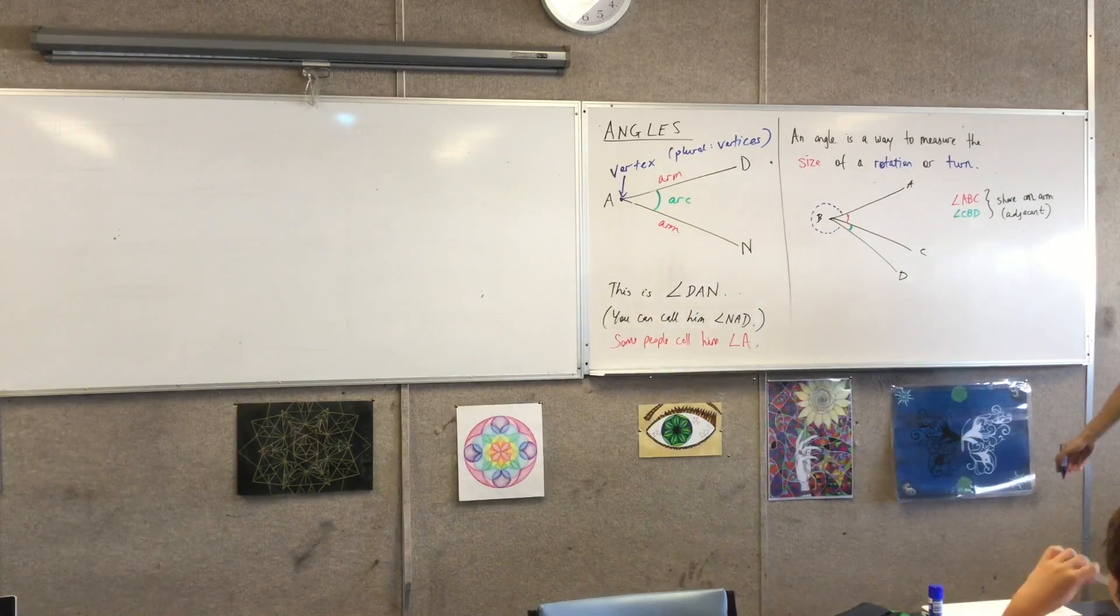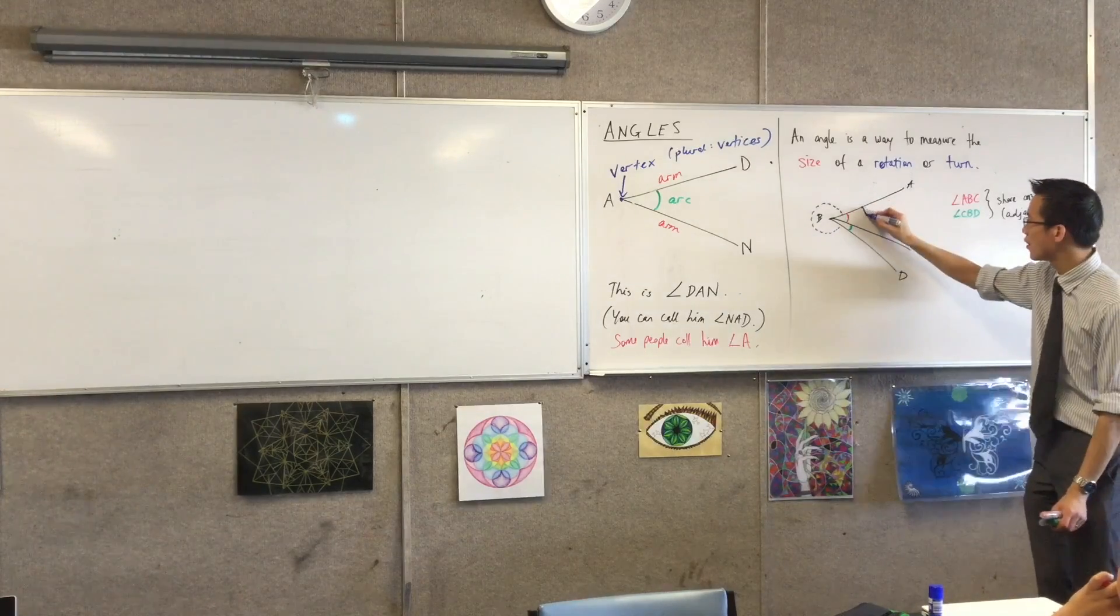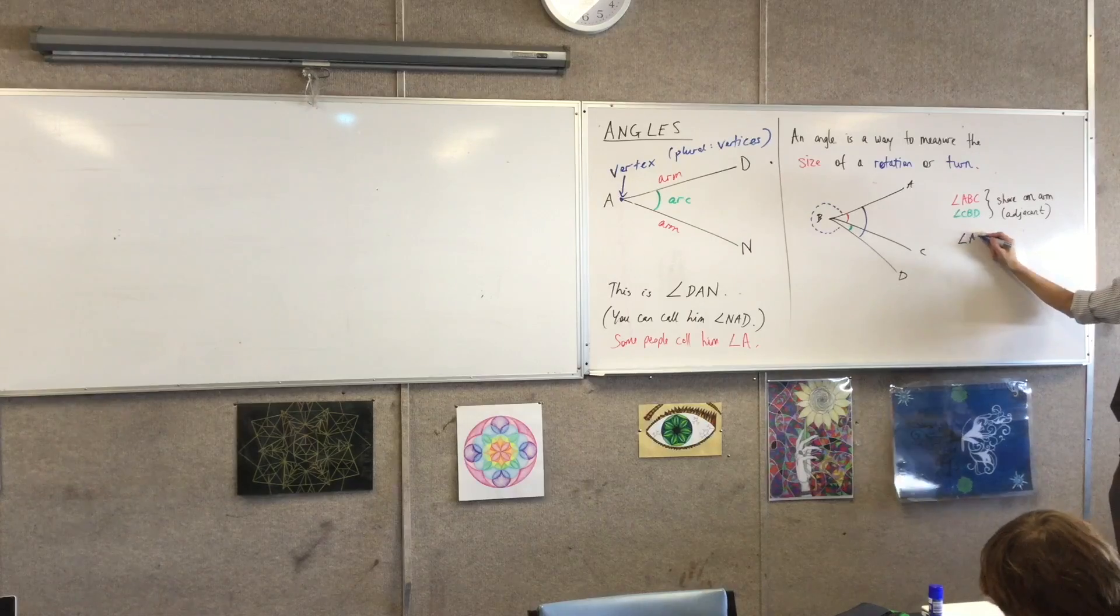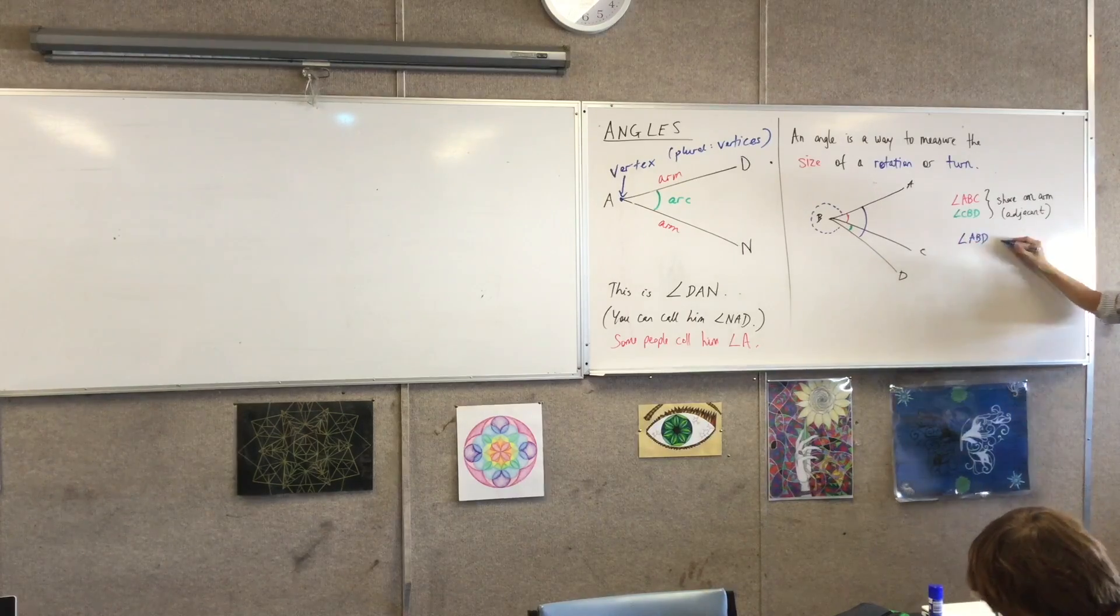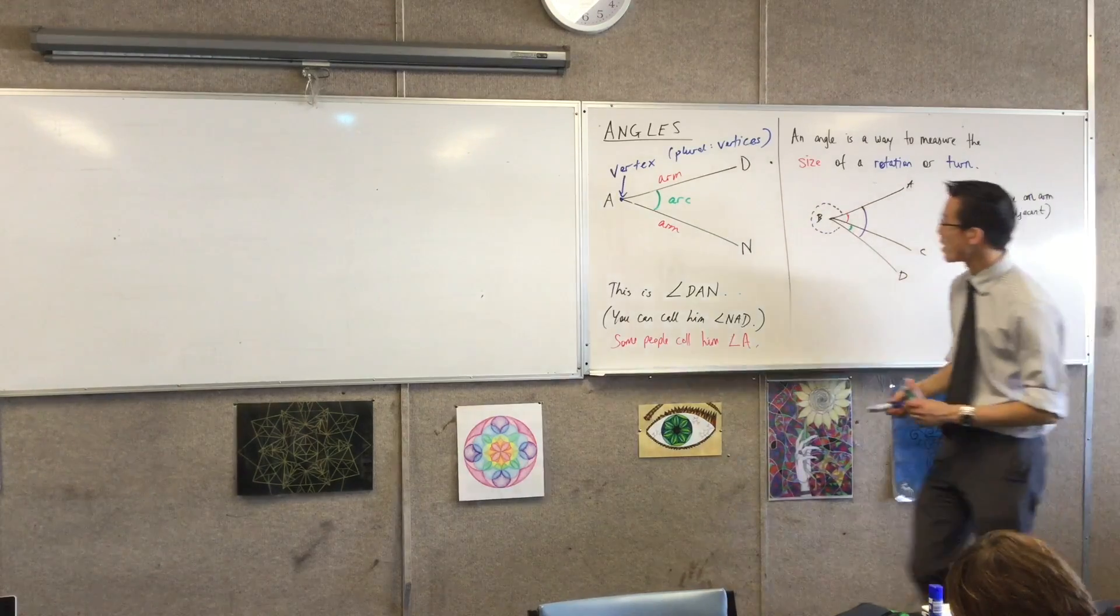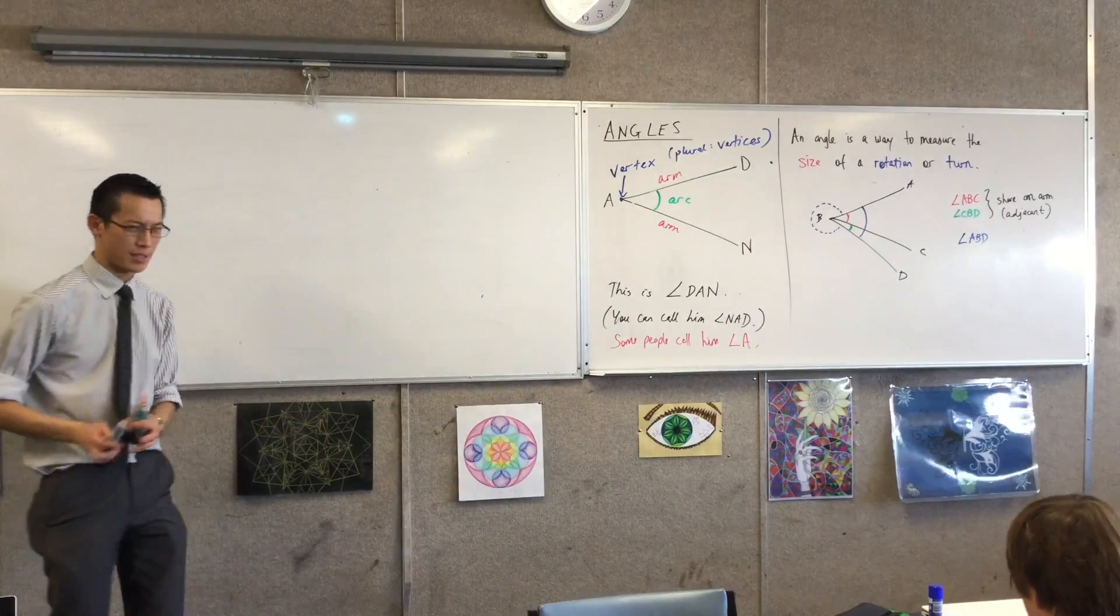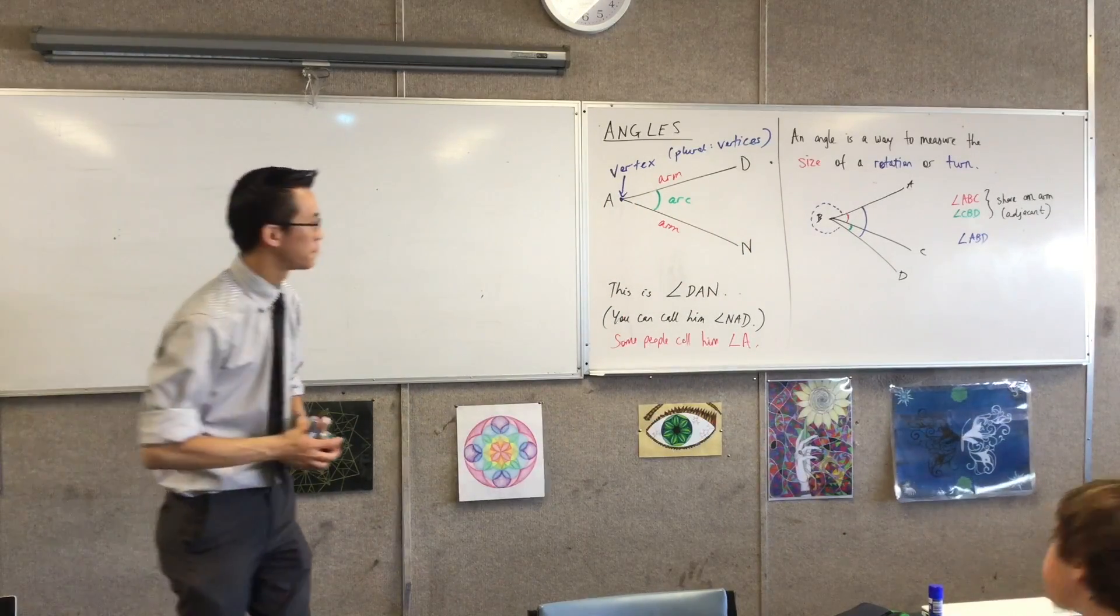I guess that means there's a fourth angle. Do you want to tell us? A, B, D. A, B, D. Yeah, it kind of includes both of those together, right? So, there's angle A, B, D as well, right? So, there's three, and I'll talk about that other one, the dotted one. I'll talk about that in one or two lessons time. We'll read that in due time. Okay?